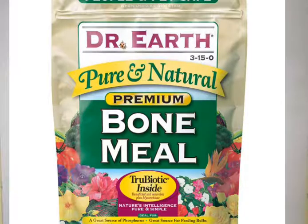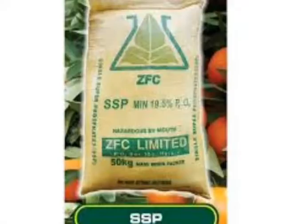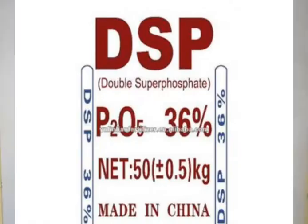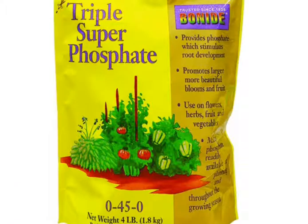Straight fertilizers that contain only phosphorus are called phosphatic fertilizers. They include single superphosphate (SSP), dicalcium phosphate (DSP), triple superphosphate (TSP), and bone meal.